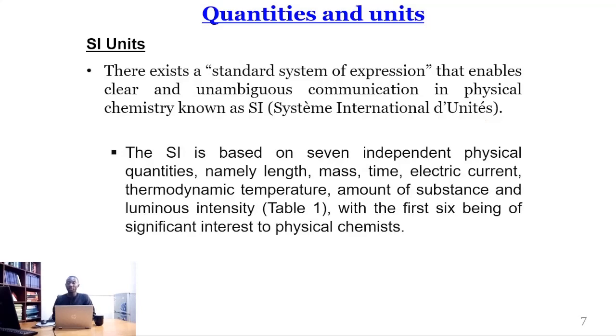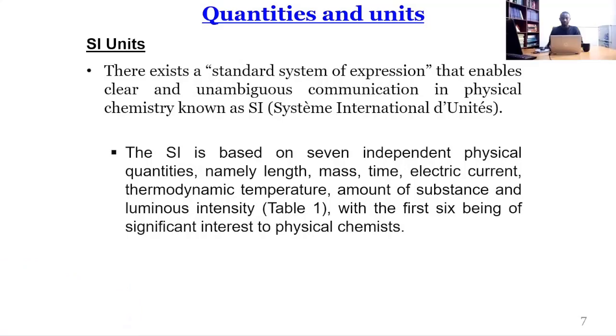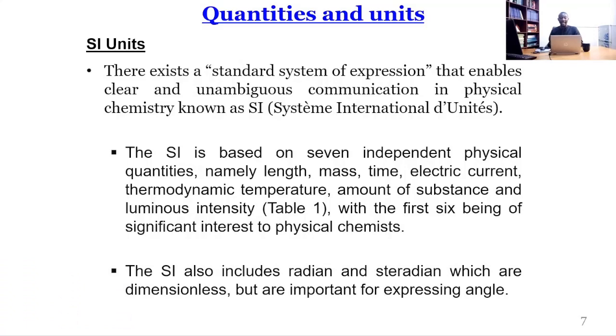The SI is based on seven independent physical quantities, namely length, mass, time, electric current, thermodynamic temperature, amount of substance, and luminous intensity. The first six are very important in PCH and I have given a table for these physical quantities. The SI also includes radian and steradian which are dimensionless and important for expressing angles.